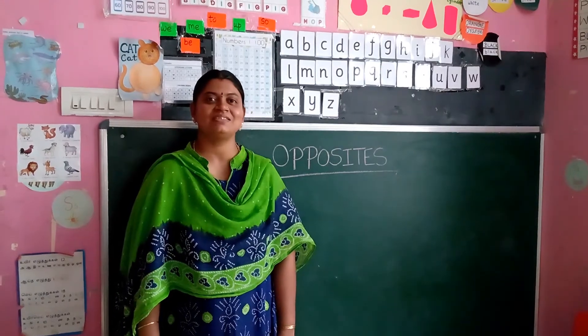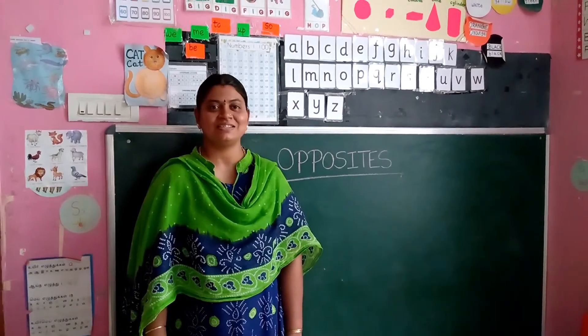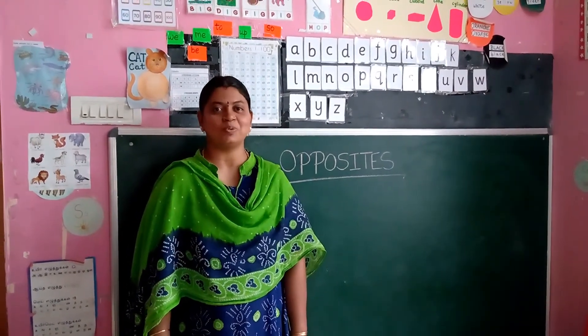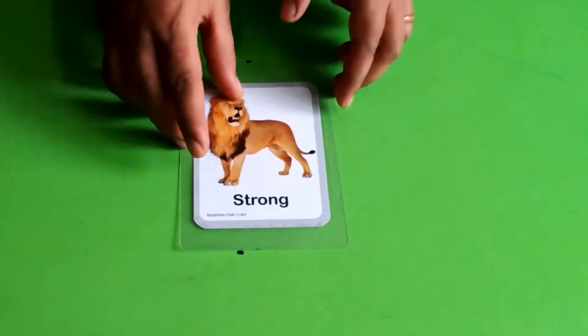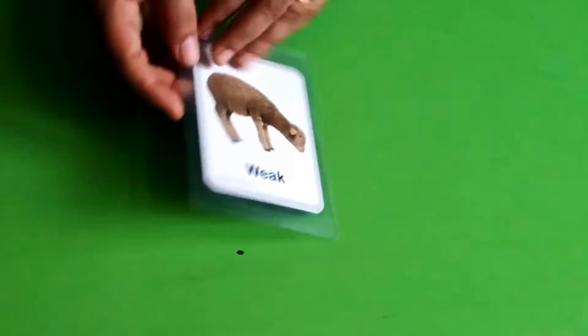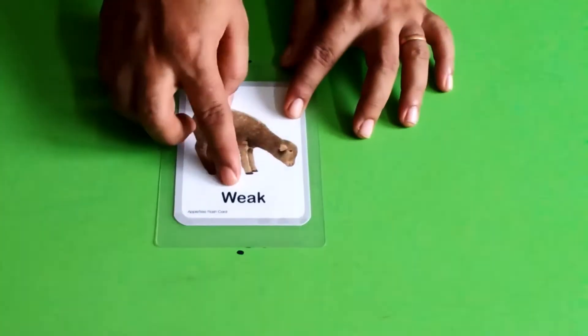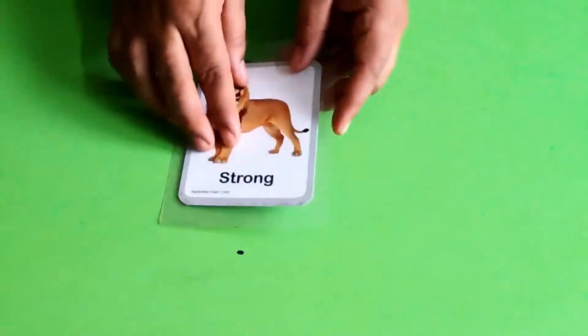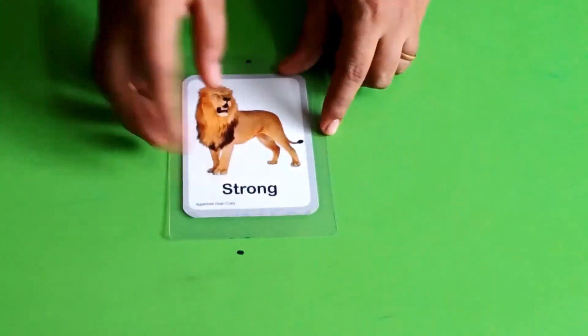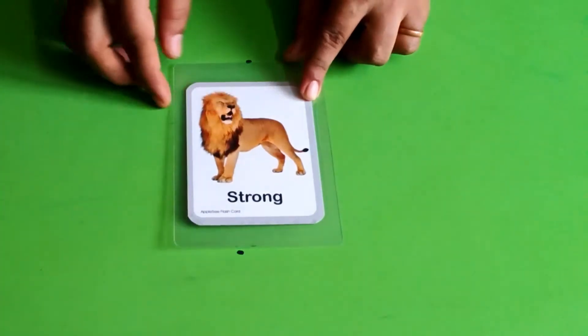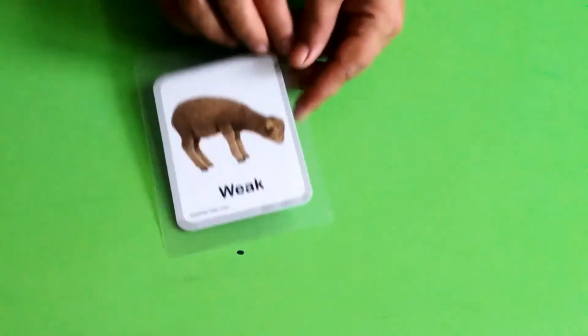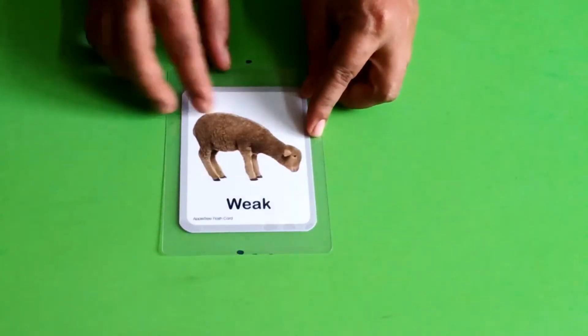Hello kids, let's see our poses. Strong, weak, strong, weak. The lion is strong, the lamb is weak.